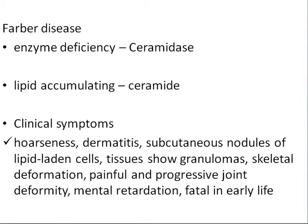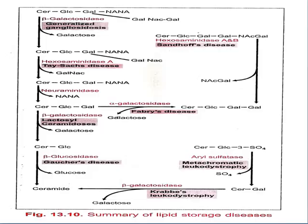Farber's disease involves a deficiency of ceramidase, with accumulation of ceramide. Clinical symptoms include hoarseness, dermatitis, subcutaneous nodules of lipid-laden cells. Tissues show granulomas, skeletal deformities, painful and progressive joint deformities, mental retardation, and is fatal in early life.